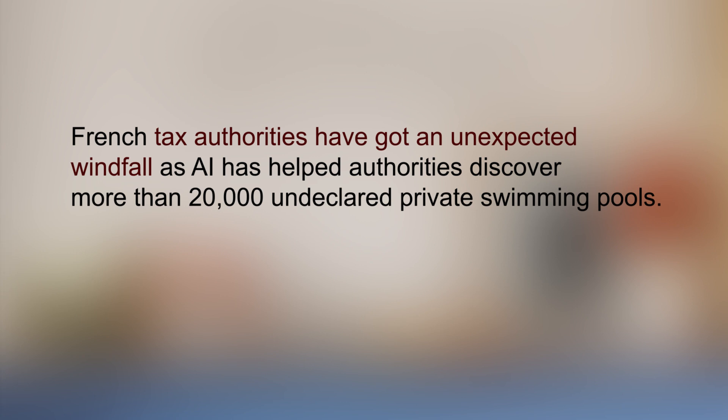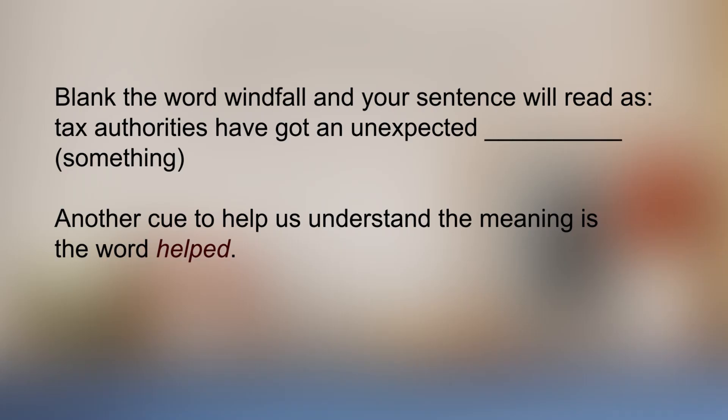First, blank the word 'windfall' and your sentence will read as: tax authorities have caught an unexpected something. Another cue that could help us understand the meaning is the word 'helped'. What happens when tax authorities are helped? What do they obtain? Money, revenue, which they wouldn't have got otherwise. So this is how we guess the meaning of unfamiliar words from the context, and this is what a good reader should be able to do, as we have already discussed in module 1. And as for AI, I am sure they all know that it means artificial intelligence.